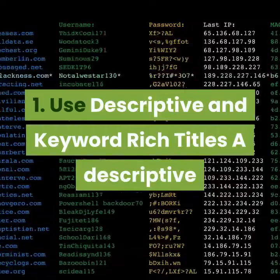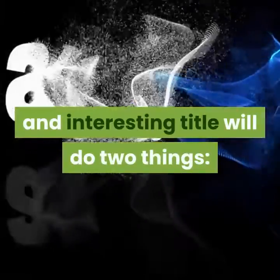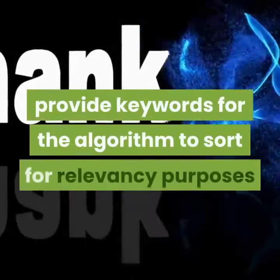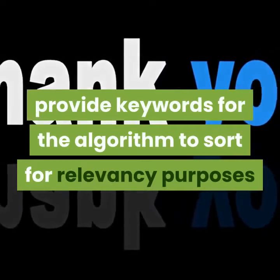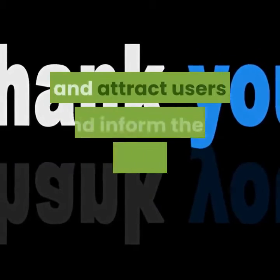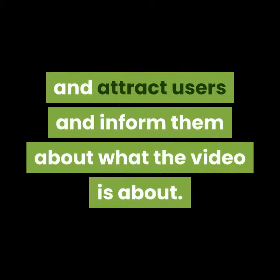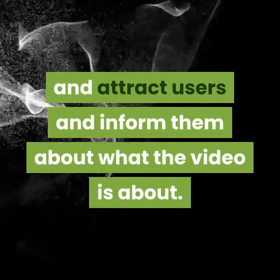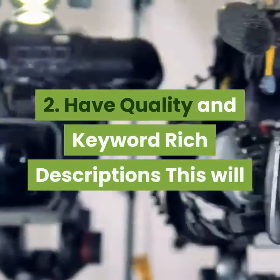One: use descriptive and keyword-rich titles. A descriptive and interesting title will do two things: provide keywords for the algorithm to sort for relevancy purposes, and attract users and inform them about what the video is about.